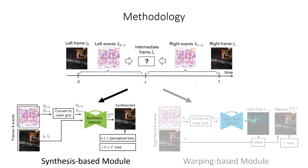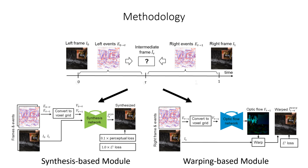The warping-based module uses the events to predict intermediate non-linear flow, which is used to warp the original keyframe. Since flow is computed from events, it does not suffer from image degradation such as blurring or over- and under-saturation. This procedure is repeated twice, once for each keyframe-event chunk pair, resulting in two warped images.